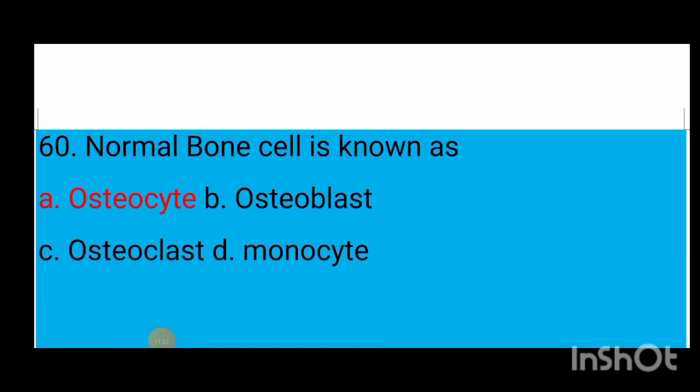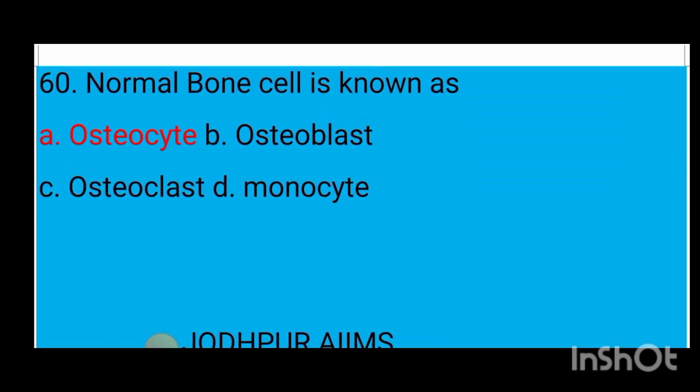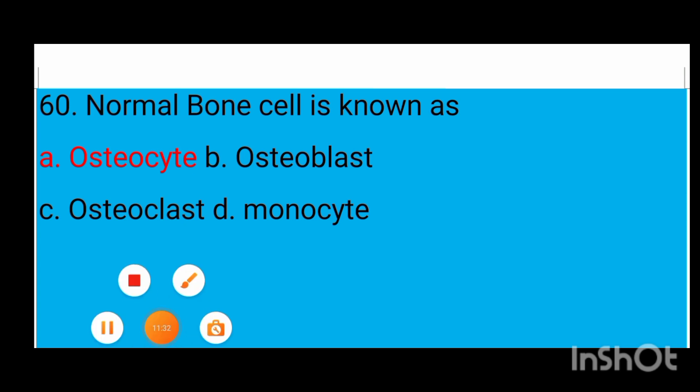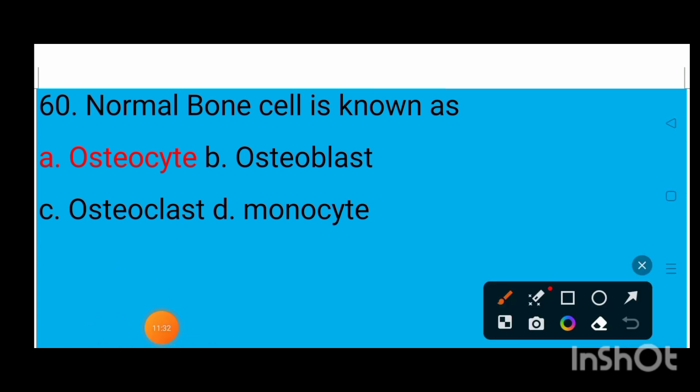Question number 60: Normal bone cell is known as option A osteocyte, option B osteoblast, option C osteoclast, option D monocyte. The correct answer is option A — osteocyte.